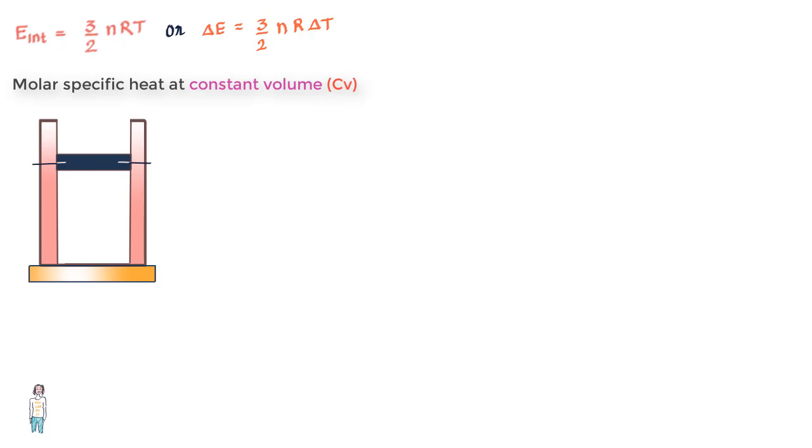Let us take n moles of an ideal gas at pressure P and temperature T in a cylinder where volume is fixed at V. This is the initial state I of the gas on the PV diagram. Now you add a small amount of energy by providing heat Q from the thermal reservoir, and we do so slowly so that equilibrium is not disturbed.